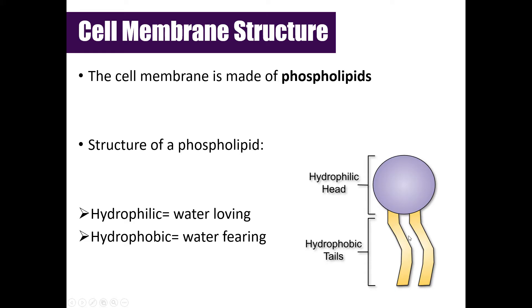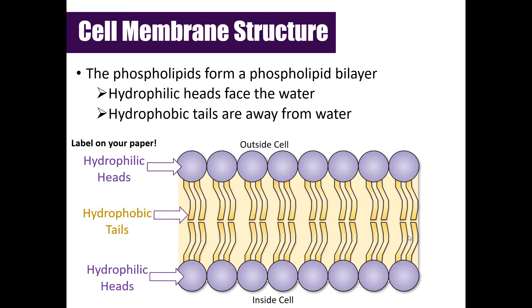The structure of the cell membrane is formed when these phospholipids line up in two layers, which we call the phospholipid bilayer. The hydrophilic heads face the water, while the hydrophobic tails are away from the water. This arrangement helps keep molecules from passing through too easily — it's a double layer of protection that helps regulate what comes in and out of the cell so it can maintain homeostasis.